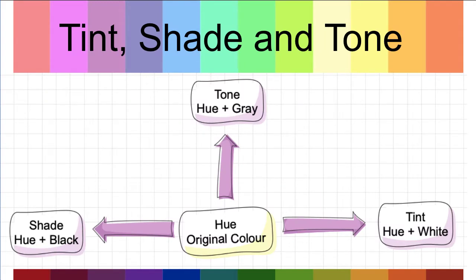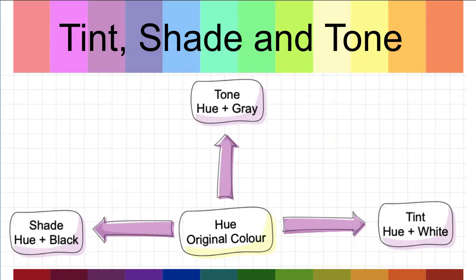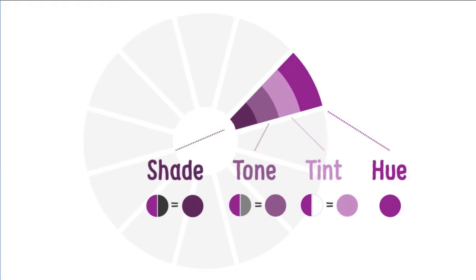This leads us to the next section which is about tint, shade and tone. Tint, shade and tone are created from the original hue. The original hue can be considered the colours around the outer edge of the colour wheel. As we move towards black on the left-hand side, we move from 0% of black added to the hue to 100% of black added to the hue, transitioning from the original hue colour to a darker black-type hue. When we add tone we're actually adding grey to the hue, and when we're adding a tint to a hue we're adding white to the original hue colour. This can be seen in the diagram: the hue on the outer edge, a tint being the quantity of white added, the tone being the amount of grey added, and the shade being the amount of black being added to the original hue.